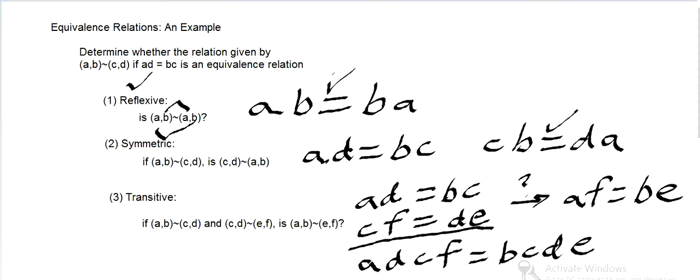And then we can cancel and we can see quickly. If we cancel the D and the C, we divide out by D and C, then we get, just using algebra, AF equals BE. So it's also transitive.